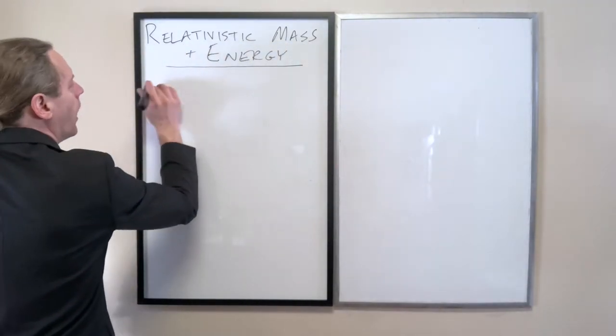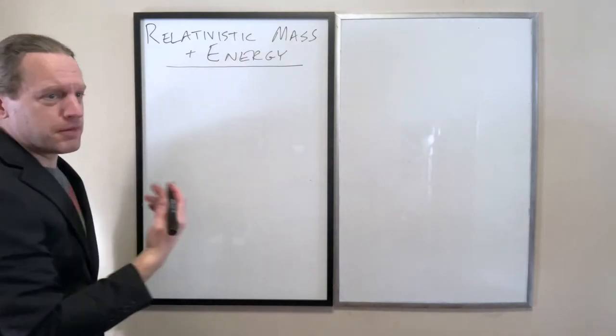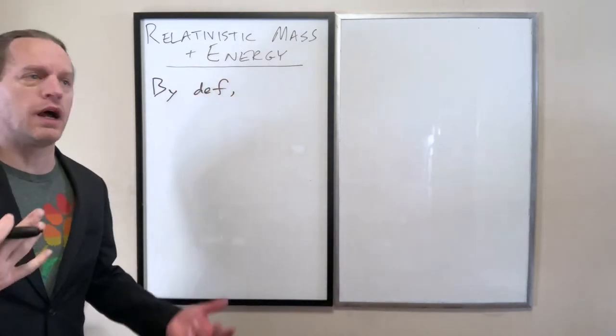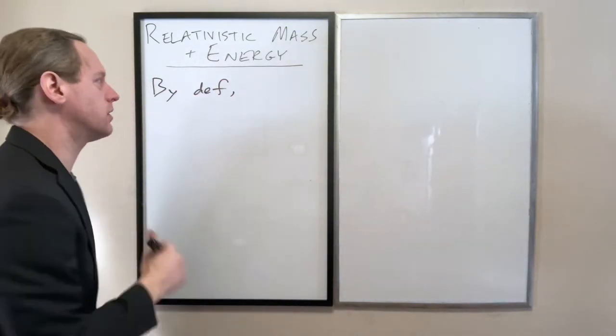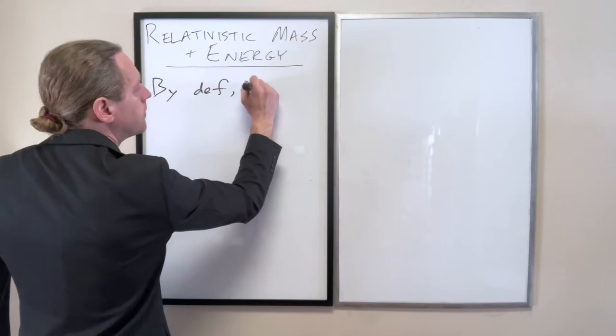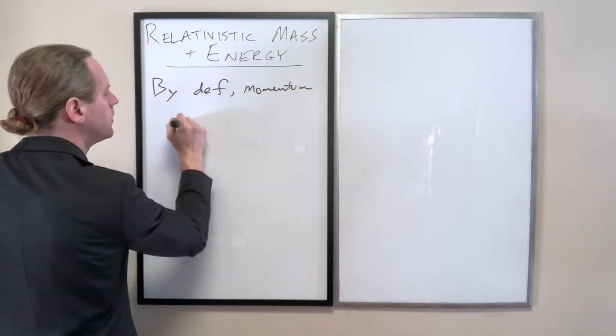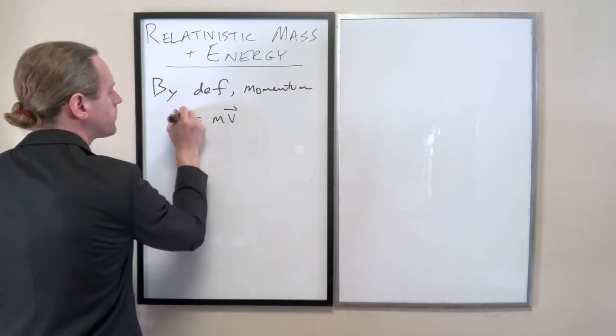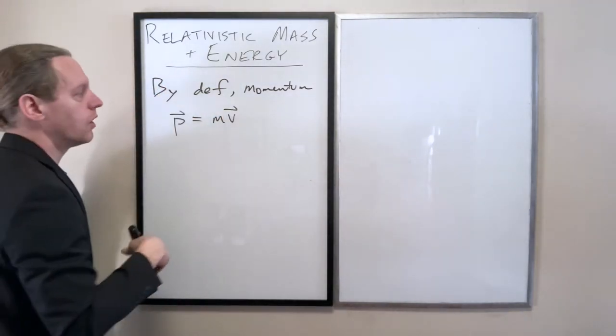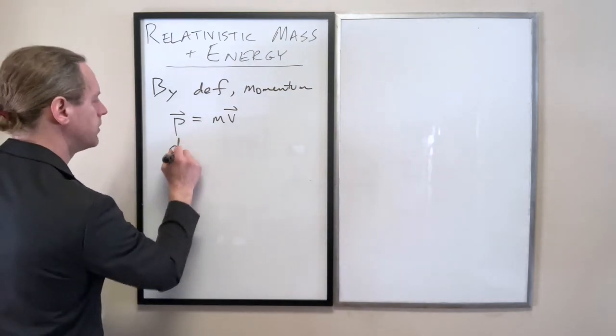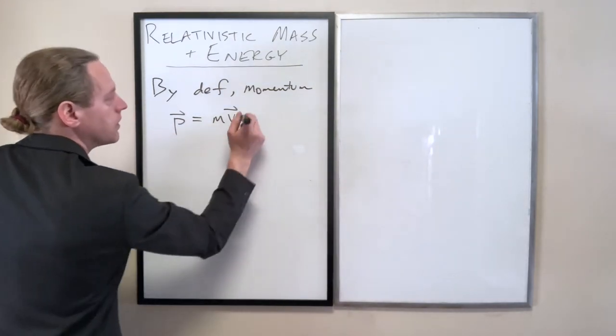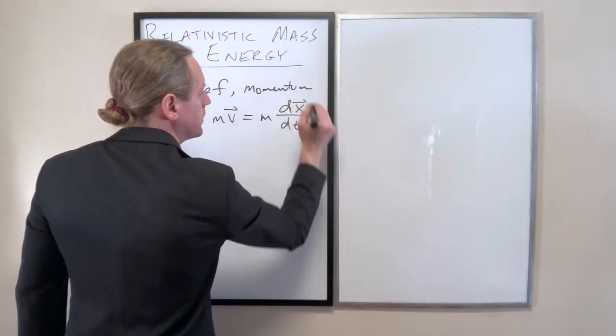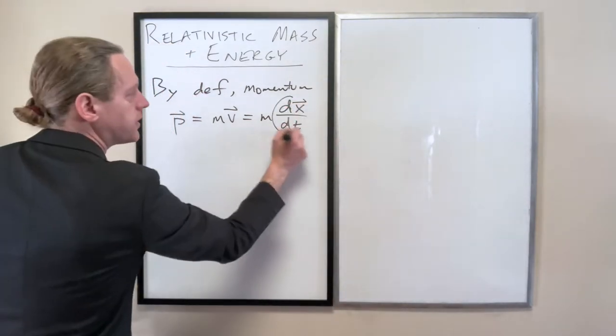So we have the, just by definition, and at least according to how Newton had written this, the momentum P equals MV. Or you could think of this as M times dx dt. But let's look at this here for a second.